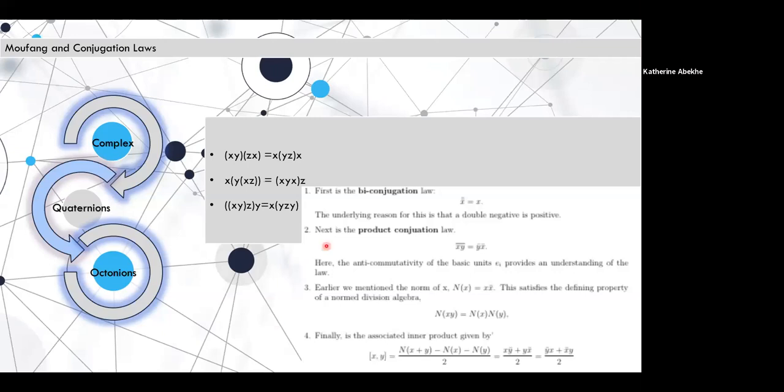Here we just show the Mufong laws, which attach more predictability to the octonions, and we show some conjugation laws. We show the double conjugation law, which is very similar to double negation laws. The product conjugation law, which stems from the anti-commutativity of the octonions, and we show that the norm of xy is the norm of x times the norm of y. And finally, we give a formula for the associated inner product.